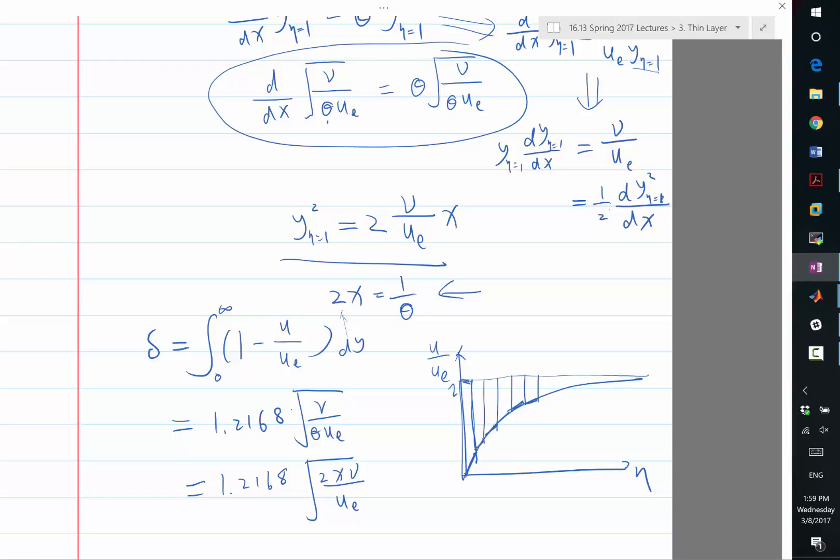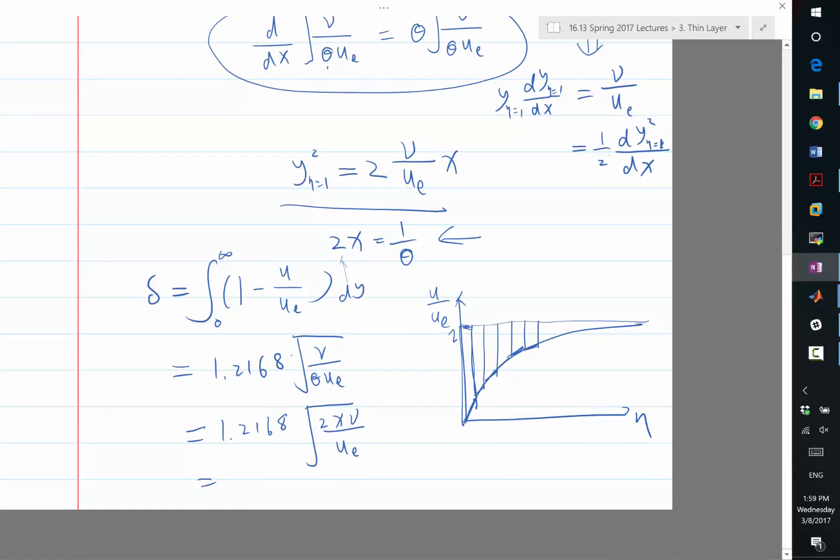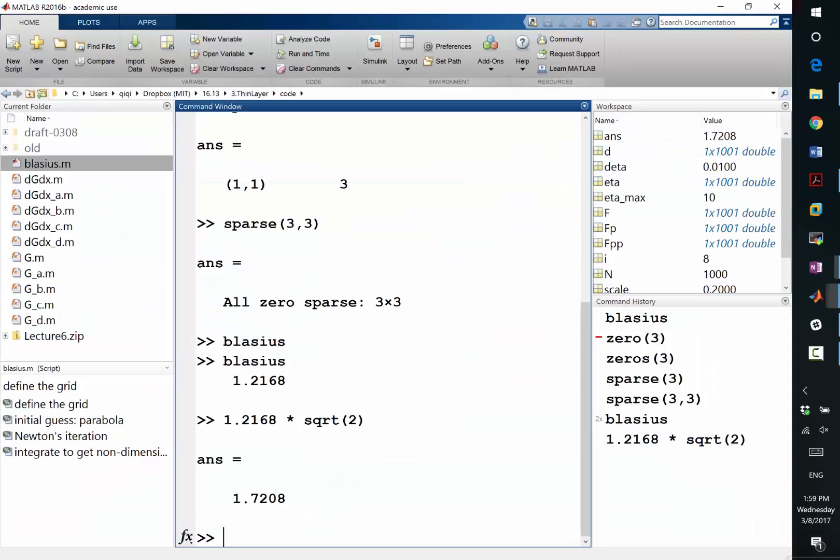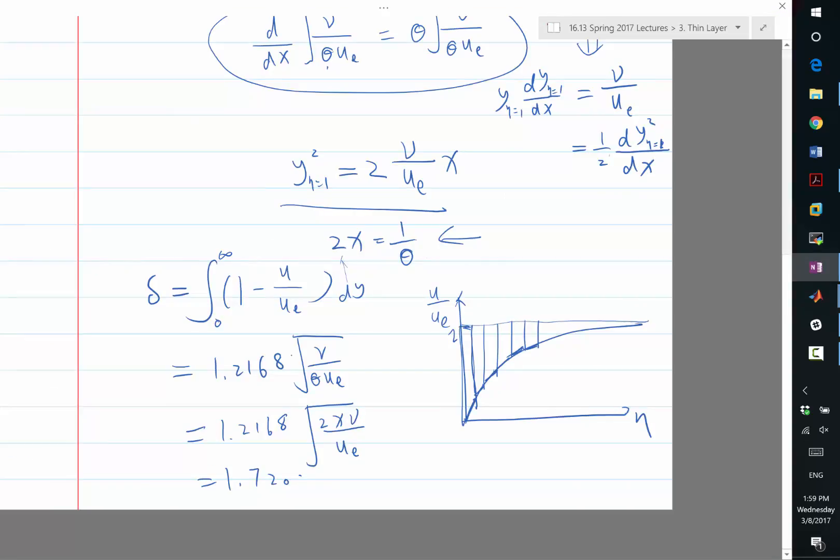If you use the Reynolds number based on the chord length. So you take the square root of 2, multiply by the 1.2, and what is left is square root of x nu divided by ue.